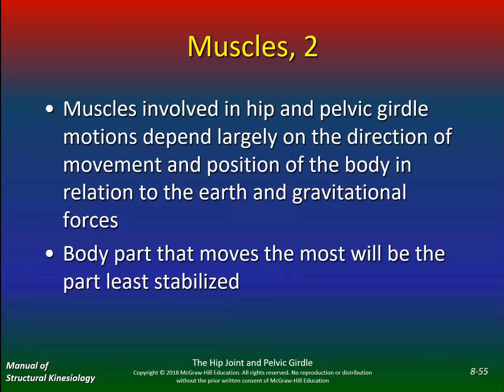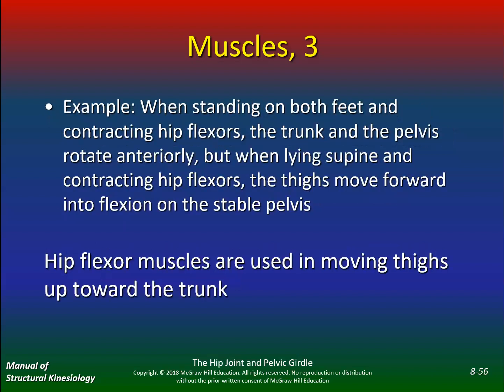Muscles involved in hip and pelvic girdle motions depend largely on the direction of movement and position of the body in relation to the earth and gravitational forces. The body part that moves the most will be the part least stabilized — you sacrifice mobility for stability. For example, when standing on both feet and contracting hip flexors, the trunk and pelvis rotate anteriorly.